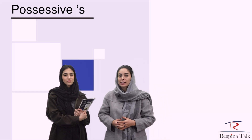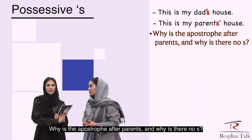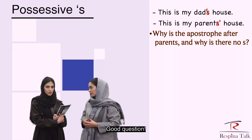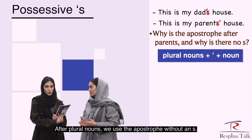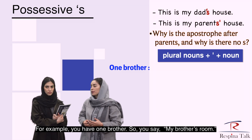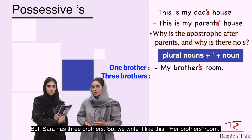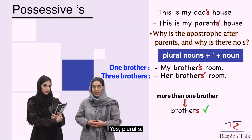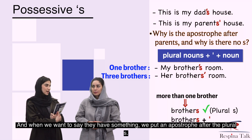Take a look at these sentences. This is my dad's house. This is my parents' house. Why is the apostrophe after parents? And why is there no S? Good question. After plural nouns, we use the apostrophe without an S. For example, you have one brother, so you say my brother's room. But Sarah has three brothers, so we write it like this — her brothers' room. So if it is more than one brother, we say brothers — plural S. And when we want to say they have something, we put an apostrophe after the plural S. That's right.